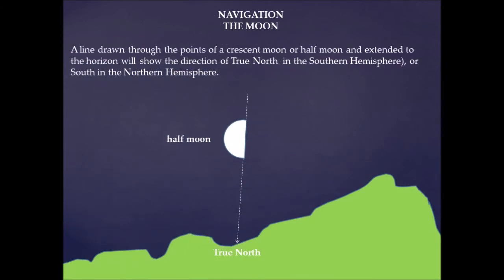Here we have another method of finding direction using the Moon. The Moon can be used to find north or south, depending on which hemisphere you're in. If you have a half Moon or a crescent Moon and you draw a line through the pointed ends of the crescent or the ends of the half Moon, and extend that line down to the horizon — if you're in the Southern Hemisphere it will point to true north; if you're in the Northern Hemisphere it will point directly to south. That gives you an indication of direction apart from the rising and setting of the Moon.